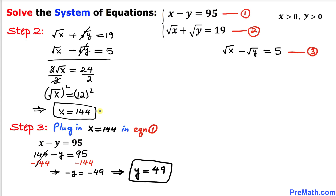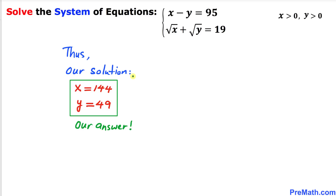Both values x equals 144 and y equals 49 satisfy the two original equations. So the solution to this given system of equations is x equals 144 and y equals 49. Thanks for watching — please don't forget to subscribe to my channel for more exciting videos!